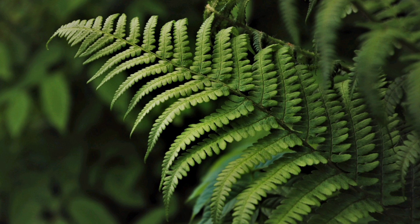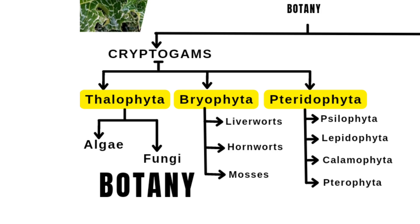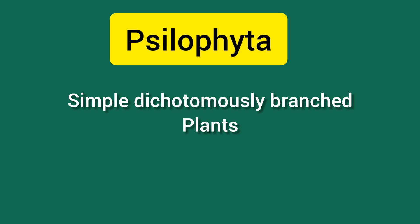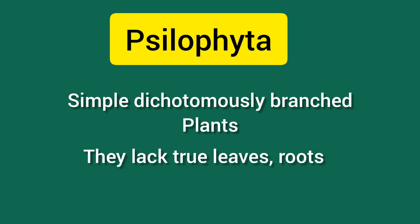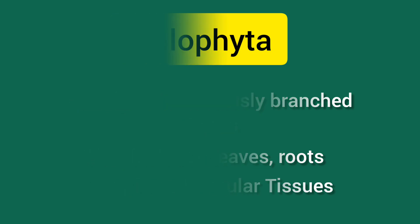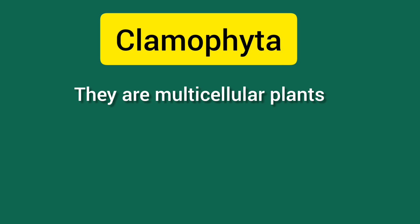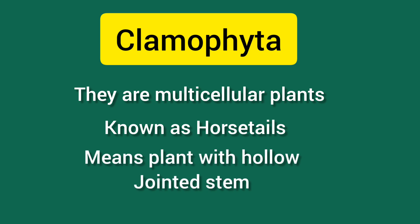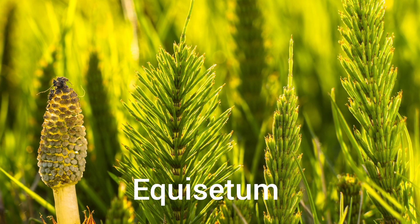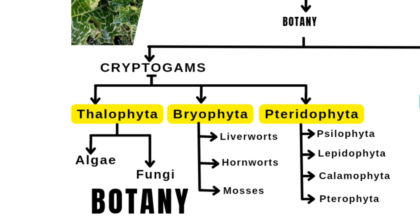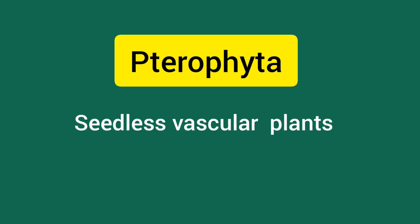Pteridophyta is further divided into Psilophyta, Lycophyta, Calamophyta, and Pterophyta. Psilophyta are simple, dichotomously branched plants that lack true leaves and roots but have vascular tissues. Lycophyta are spore-type plants found in fossils, having vascular tissues. Calamophyta are multicellular plants also known as horsetails — plants with hollow jointed stems bearing whorls of narrow leaves producing spores; Equisetum belongs here, and their fossils have been found from the Devonian period. Pterophyta are seedless vascular plants reproducing by spores, and may be homosporous or heterosporous.